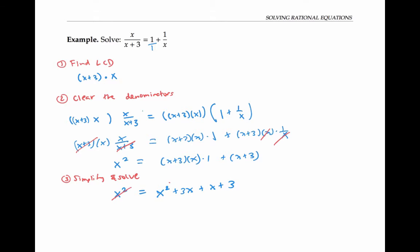The x squared cancels on both sides, and so I get zero equals four x plus three. So four x is negative three, and x is negative three fourths.